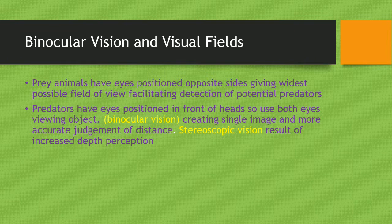Finally, we're going to talk about binocular vision and visual fields. Prey animals have eyes positioned on opposite sides, giving the widest possible field of view and facilitating the detection of potential predators — for example, rabbits' eyes are very far back so they can more or less see behind them. Predators, however, like lions and humans, have eyes positioned in front of their heads so they can use both eyes to view an object. This is called binocular vision, which creates a single image and a more accurate judgement of distance. Stereoscopic vision is a result of increased depth perception.